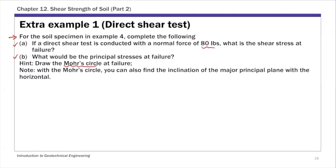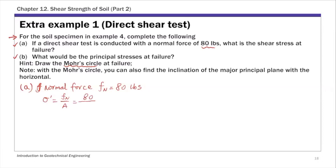For part A, we have a normal force of 80 pounds. The normal stress sigma prime is 80 divided by the cross-sectional area — the same specimen as example 4 — so it's 0.0278, giving a normal stress of 2880.